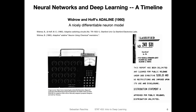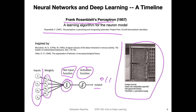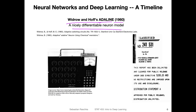After the perceptron — still talking about single-layer neural networks — there was the so-called Adaline, which stands for Adaptive Linear Neuron, by Widrow and Hoff, only three years later. What's different between the perceptron and Adaline is that Adaline is a differentiable neuron model. That changes how we learn the weights — it's more convenient because now we can use calculus to learn the weights. In a future lecture we will also talk about gradient descent, using calculus to learn the weights.